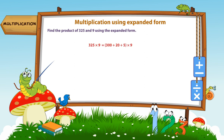Step 1: Write the multiplicand in its expanded form. Step 2: Multiply each term of the expanded form by the multiplier.